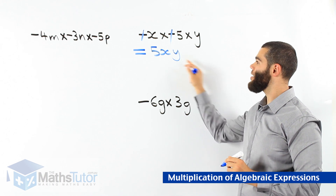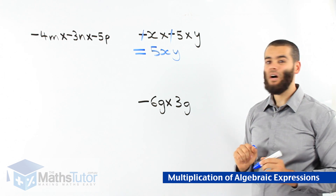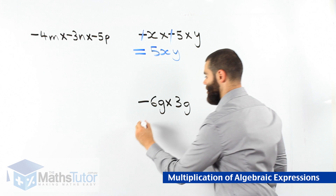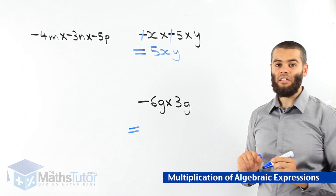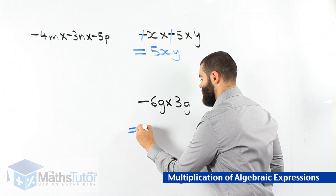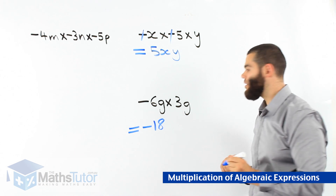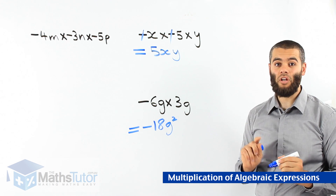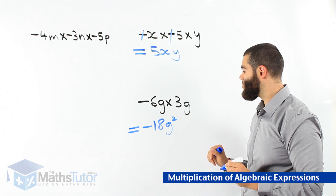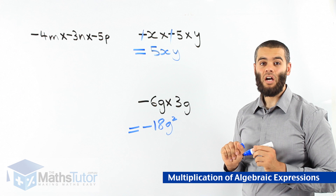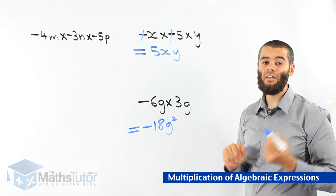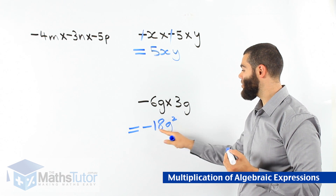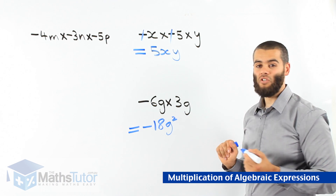We have negative 6g times 3g. Negative 6 times 3 is negative 18, and g times g is g squared. Very important in multiplication: g times g is g squared — it's like saying 5 times 5 is 5 squared, or 10 times 10 is 10 squared. So negative 6 times 3 is negative 18, and g times g is g squared. Our answer is negative 18g squared.